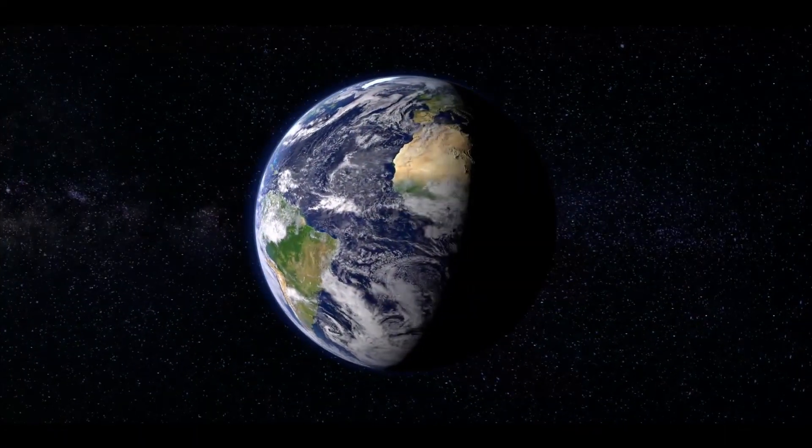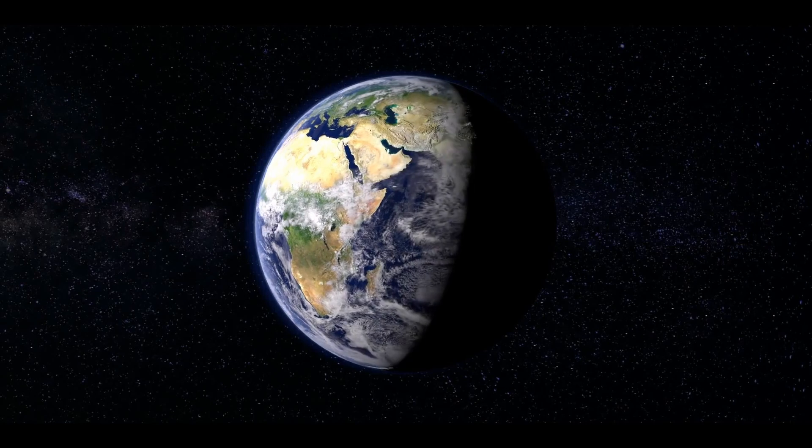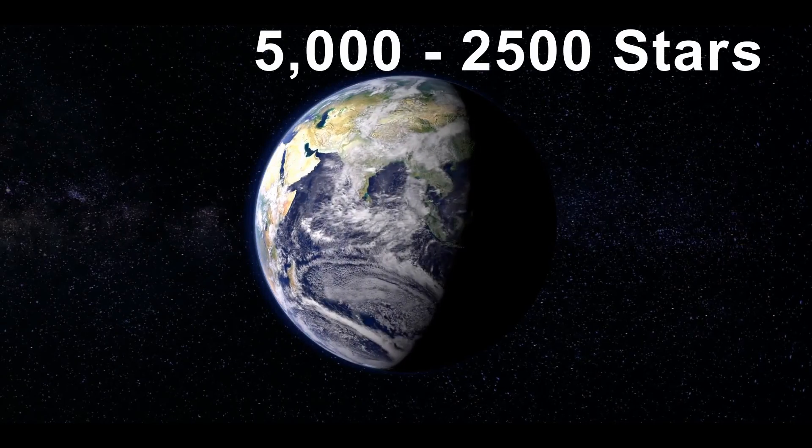At any given time, half of the Earth is in daylight, so therefore only half the estimated number, say between 5,000 to 2,500 stars, would be visible from Earth's night sight.